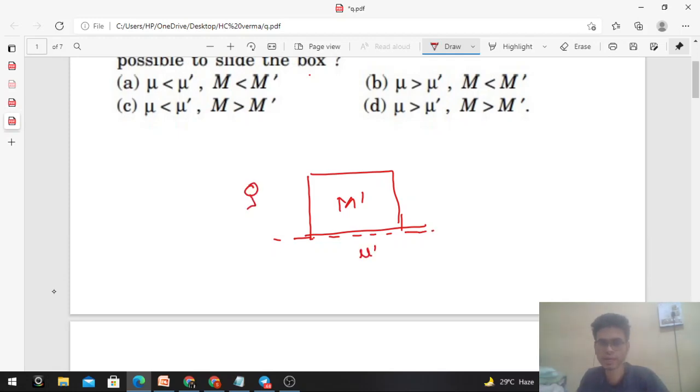Similarly, the man has mass M, and the coefficient of friction between the shoes of the man and the floor is μ.